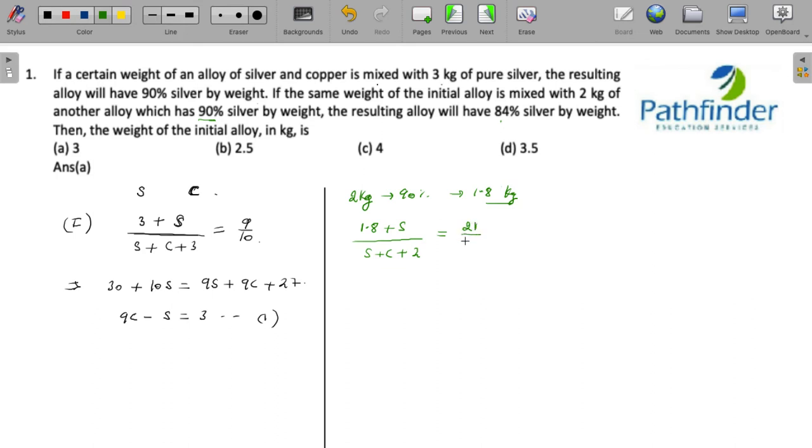So percentage of silver will be 1.8 plus S upon S plus C plus 2, and this should be equal to 84, which is 84 by 100, and 84 by 100 can be simplified to 21 by 25. So what do you get? 45 plus 25S must be equal to 21S plus 21C plus 42. And now what do you get? This should be 25S, so you get 21C minus 4S must be equal to 3.